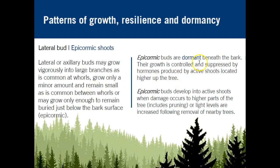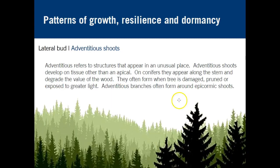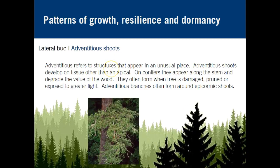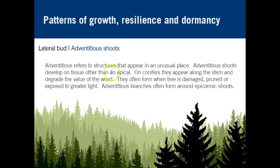Some of these buds are dormant beneath the bark. If there is damage along the stem — for instance from pruning — it can trigger these buds to burst, producing adventitious shoots. These shoots grow in unusual places, developing on tissue other than apical tissues, such as along the stem. This can degrade the value of the wood. These are often called epicormic shoots, and adventitious branches commonly form around them following damage from pruning or exposure to light.